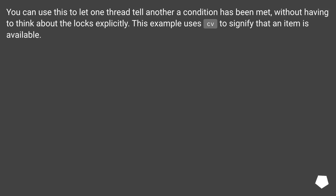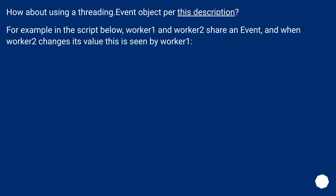This example uses CV to signify that an item is available. How about using a threading.Event object? In the script below, Worker1 and Worker2 share an event, and when Worker2 changes its value, this is seen by Worker1.